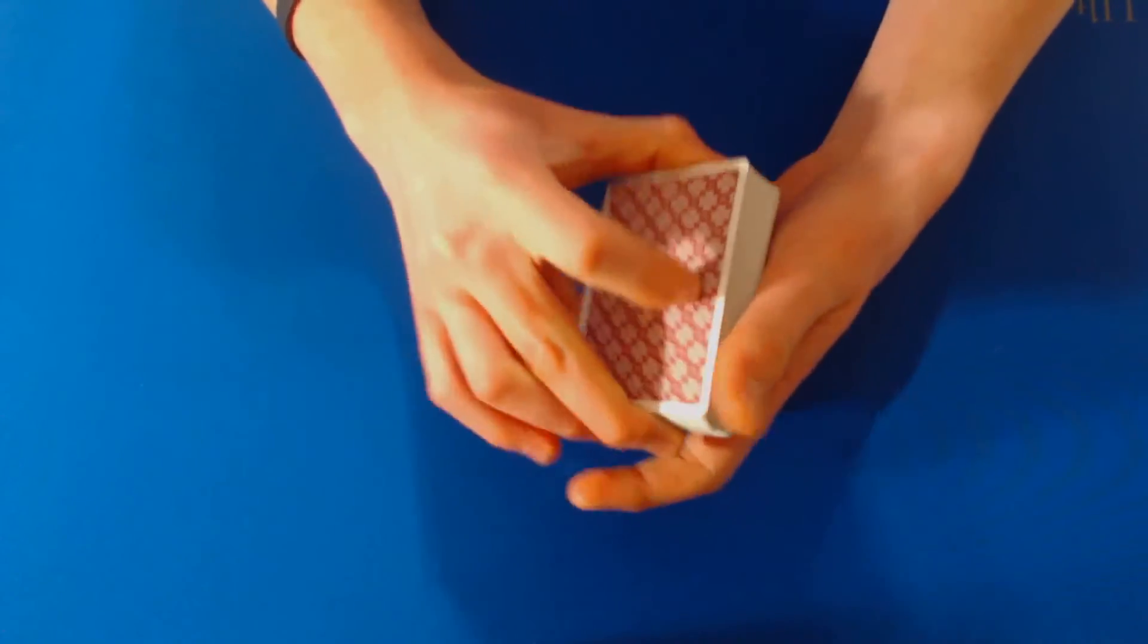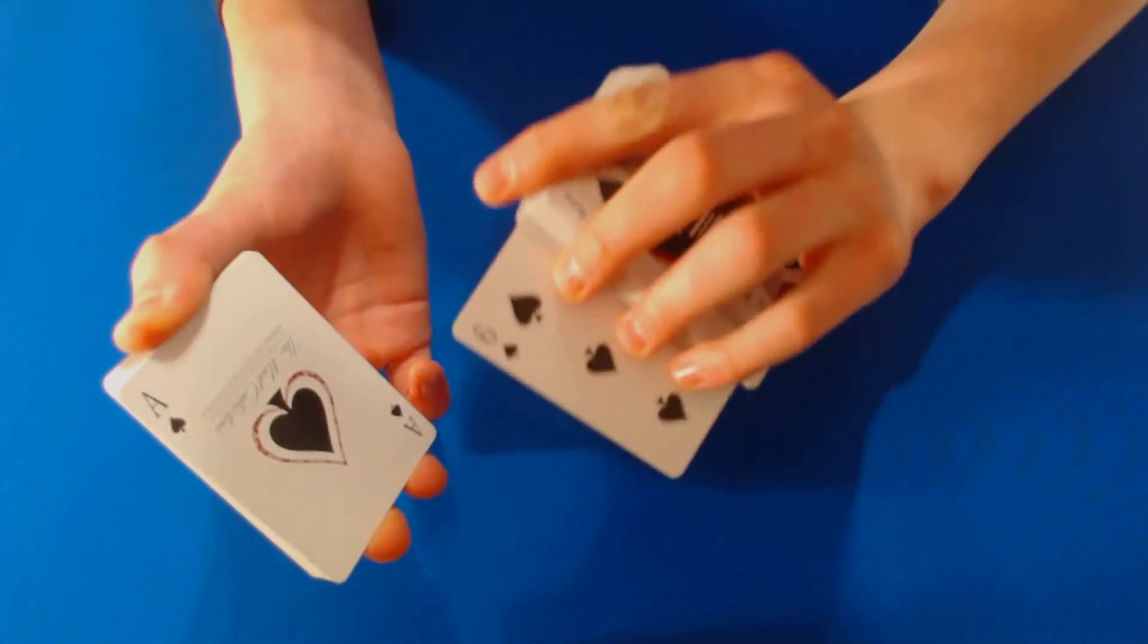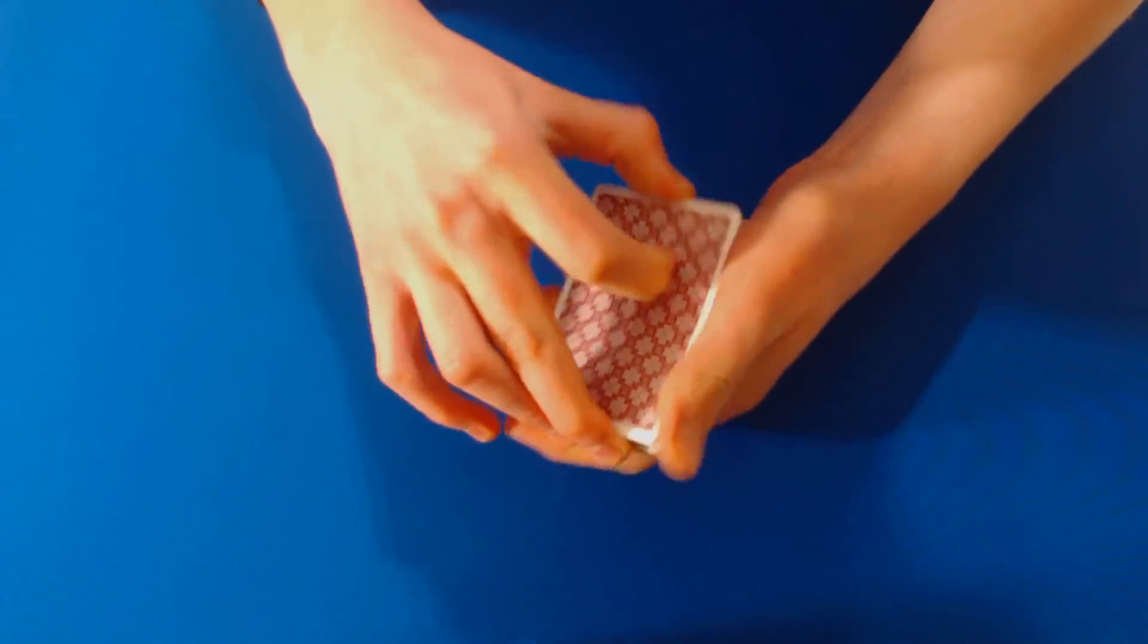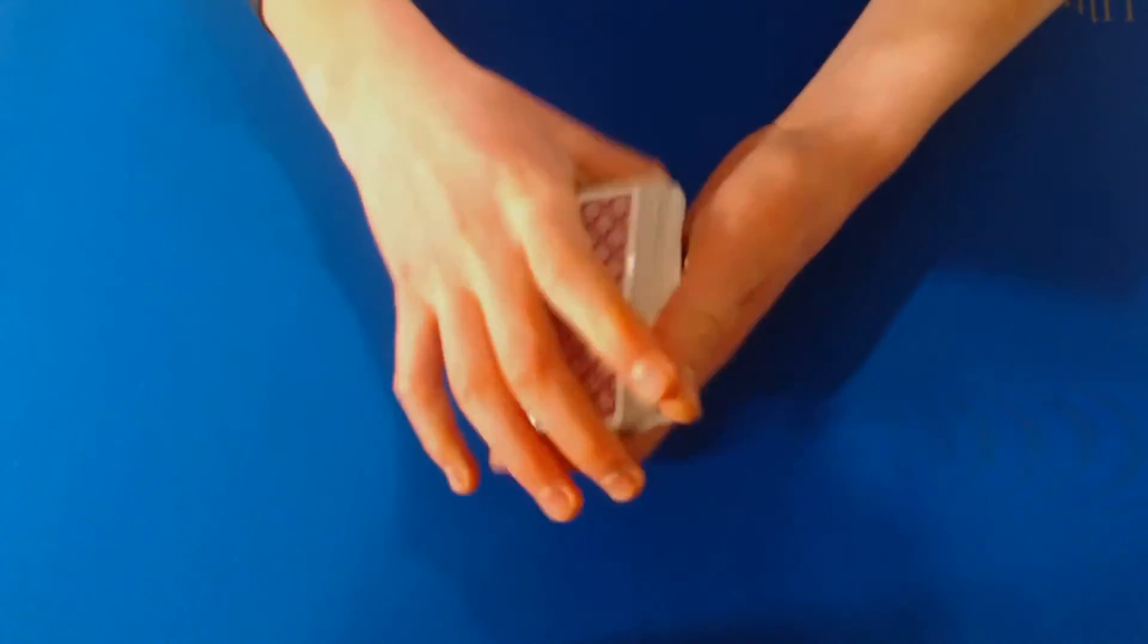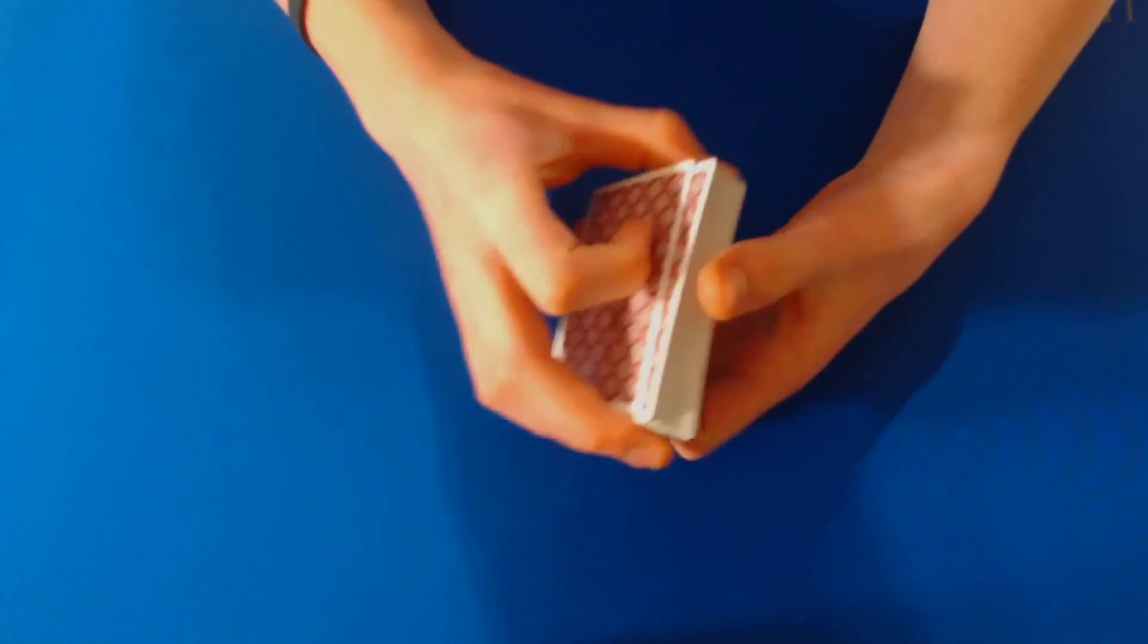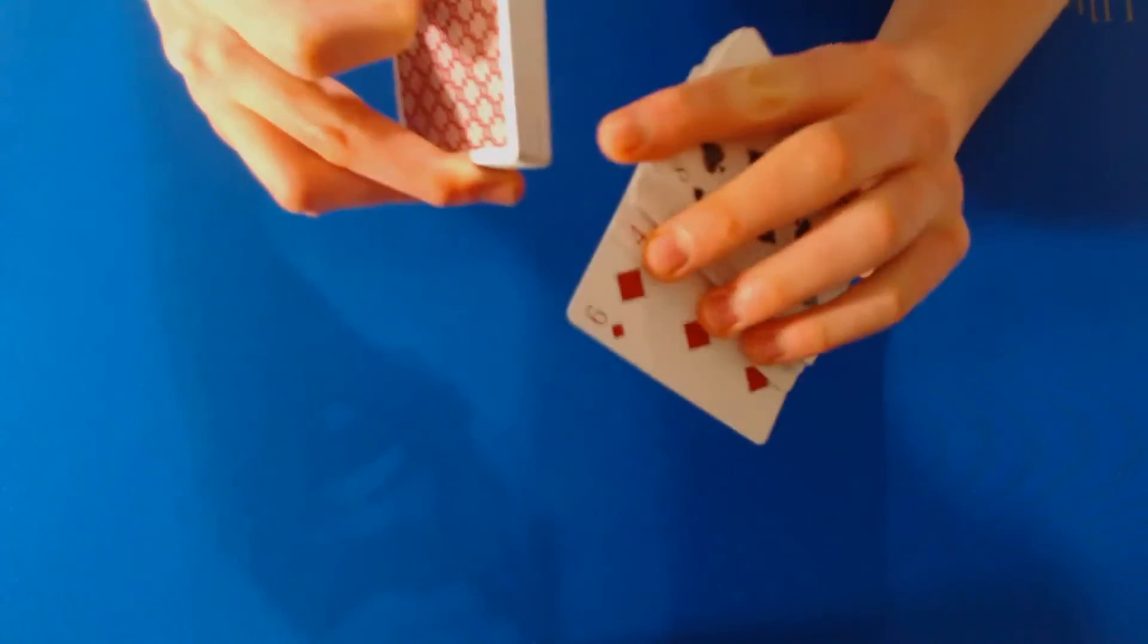But this control is deceiving because unlike a control where you would be like okay, look, six of spades, and then you immediately go to cut the deck, some people know about the pinky break which is why that can be a little less useful. But with the dribble control they're like, oh it's just a really sloppy mess, how could you know where my card is now?